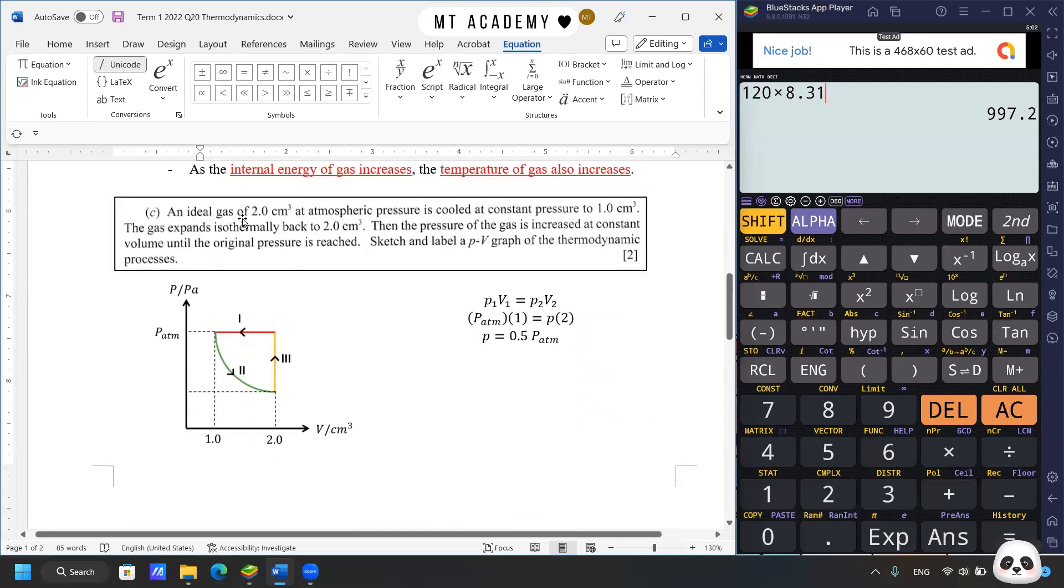Let's move on to question C. An ideal gas of 2 cm³ at atmospheric pressure is cooled at constant pressure to 1 cm³. It is then expanded isothermally back to 2 cm³. Then the pressure of gas is increased at constant volume until the original pressure is reached. Sketch and label a PV graph of the thermodynamic processes. The first process is cooled at constant pressure, so volume reduces from 2 to 1 cm³ as a horizontal line. Then isothermally back to 2 cm³, expanding based on Boyle's law. Then volume is constant with pressure increasing, so it goes up.